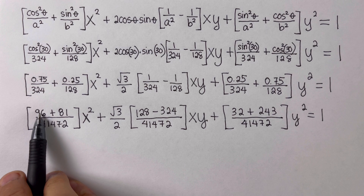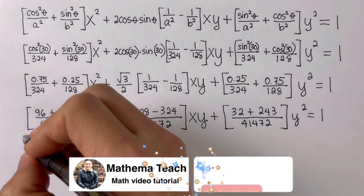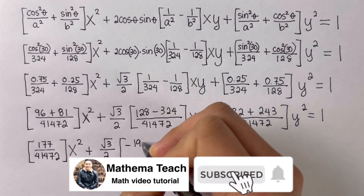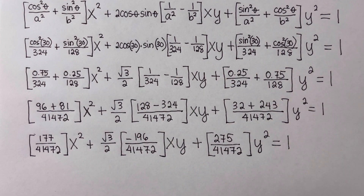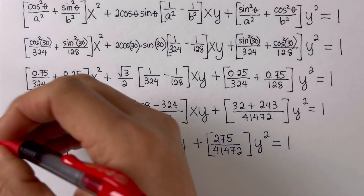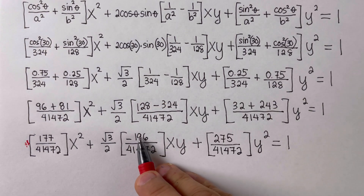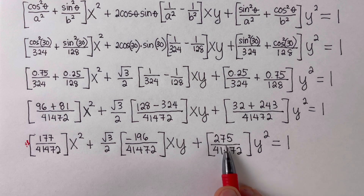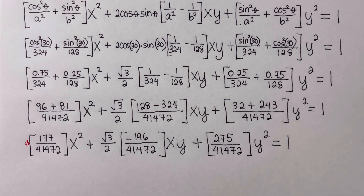Combining the numerators — adding these two, subtracting these, and adding the others — we arrive at a combined expression. We then simplify each fraction to its lowest term. Some terms are divisible by three, others by four, and we divide accordingly until no further simplification is possible. This gives us the final simplified equation.